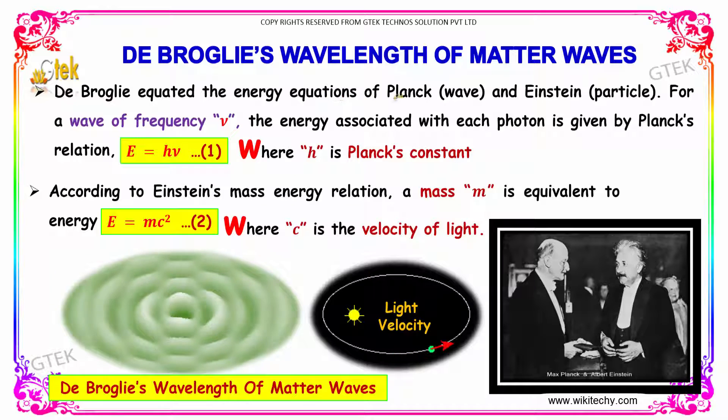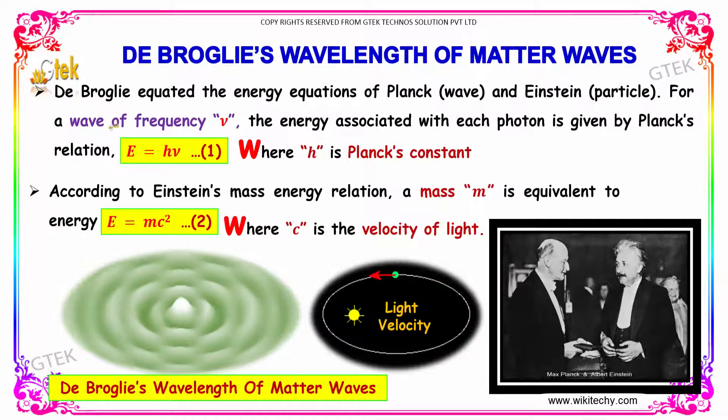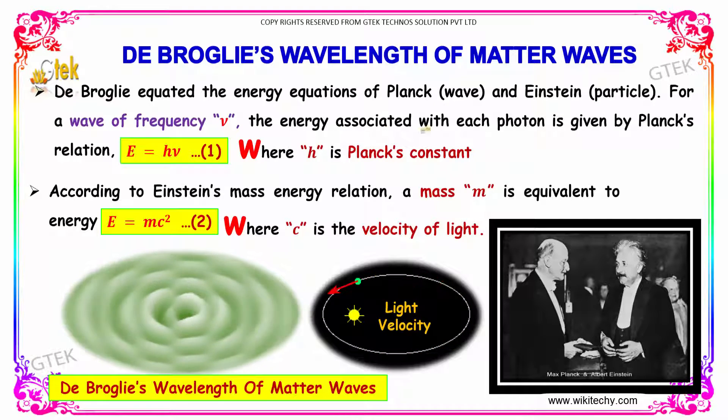De Broglie equated the energy equations of Planck and Einstein - Planck for waves and Einstein for particles. For a wave of frequency ν, the energy associated with each photon is given by Planck's relation E = hν, where h is Planck's constant.